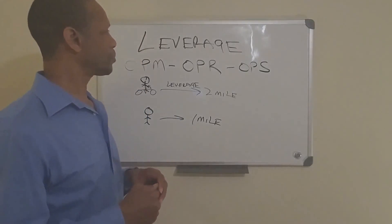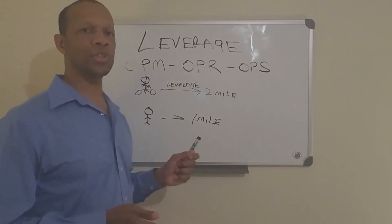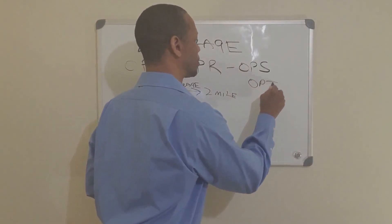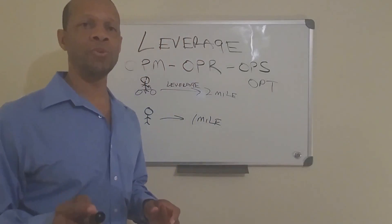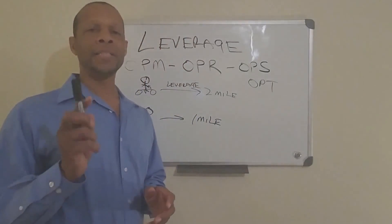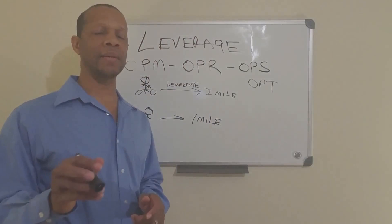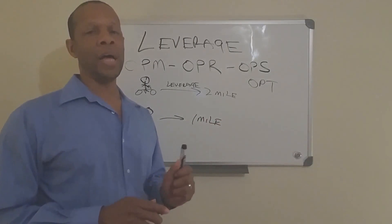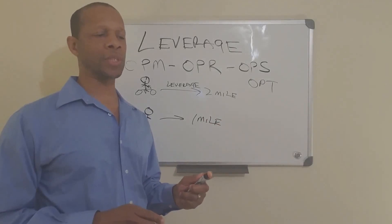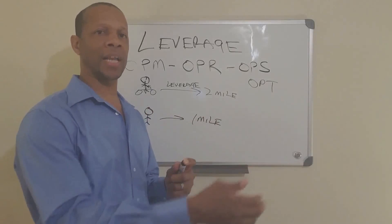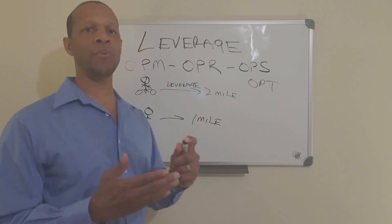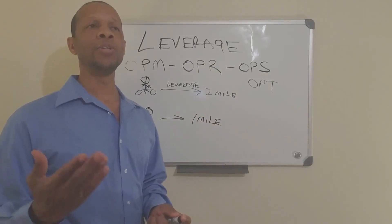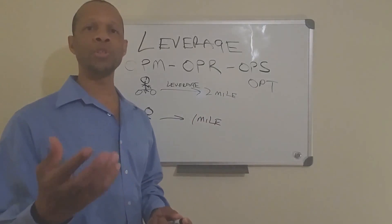Leverage. You're going to use other people's money, other people's resources, other people's time — OPT, other people's time. The most important thing to you right now should be time. Time you can't get back. Money you can lose and get back, but time you can't. So you want to leverage other people's time. I worked for a company for 28 years — I was trading my time for dollars. We want to stop doing that. As my mentor said, get away from trading time for dollars.